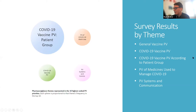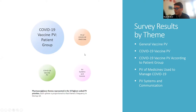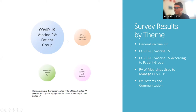You can see that the third theme — topics grouped according to COVID vaccine patient group — was very much represented in the top 10 list of priorities. We also saw equal representation of the pharmacovigilance of COVID-19 medicines, systems and communication, and COVID-19 vaccine pharmacovigilance in the top 10. We didn't see any of the more general vaccine pharmacovigilance topics rank particularly highly in our areas of prioritisation.